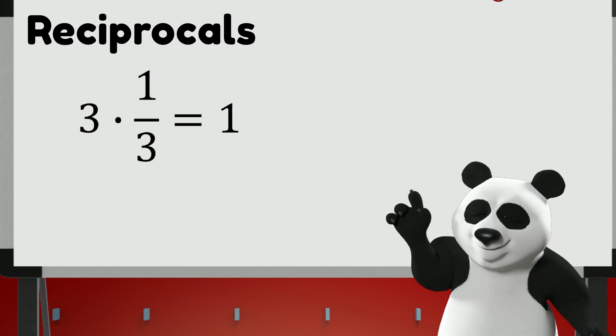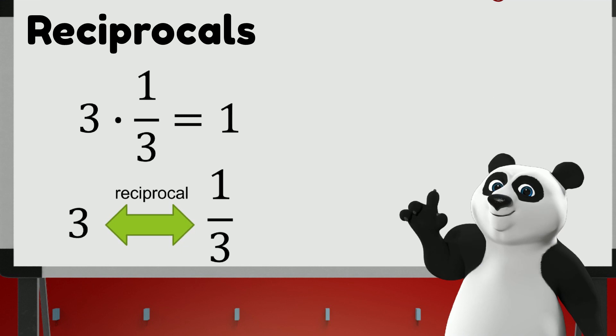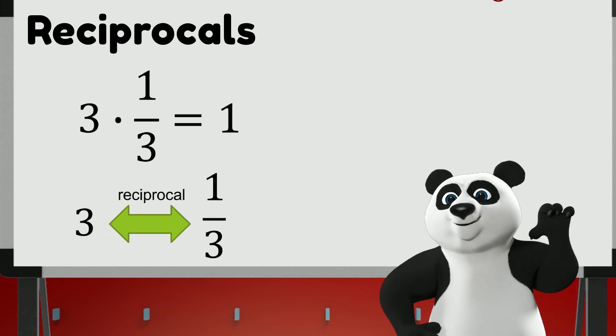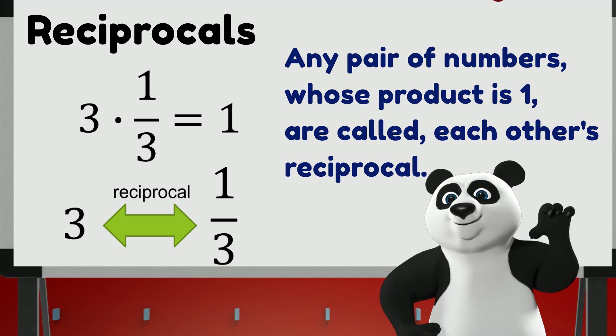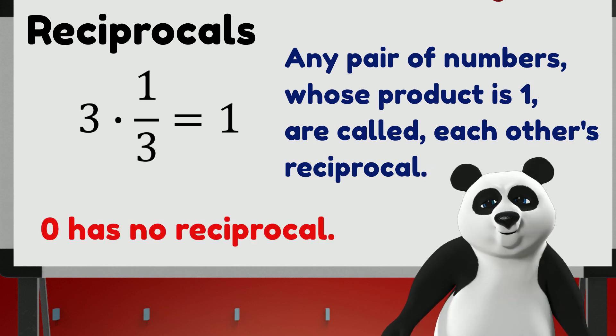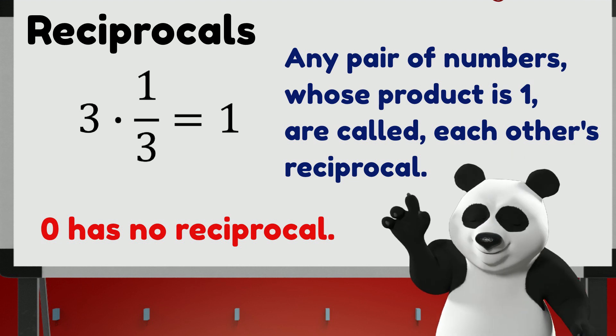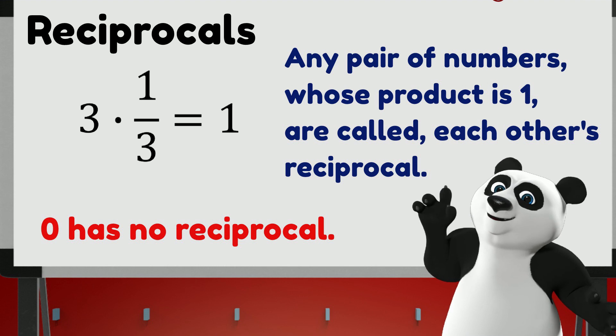3 and 1 third are said to be reciprocal to each other, meaning their product equals 1. 1 third is the reciprocal of 3, and 3 is the reciprocal of 1 third. Any pair of numbers whose product is 1 are called each other's reciprocal. Take note that 0 has no reciprocal. There is no number that can be multiplied by 0 that will give a product of 1.